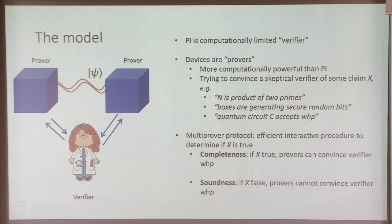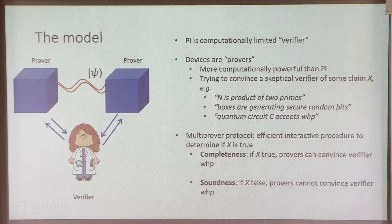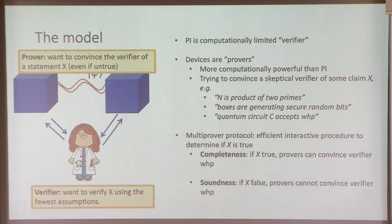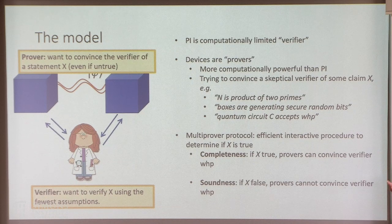The verifier will perform an interactive protocol with these two provers to determine if x is true. We want protocols satisfying two properties. Completeness: if x is true, there should be a way the provers can convince the verifier with high probability. Soundness: if x is false, there's nothing the provers can do to convince the verifier. The verifier wants to verify x using the fewest assumptions, while the provers want to convince the verifier even if x isn't true.